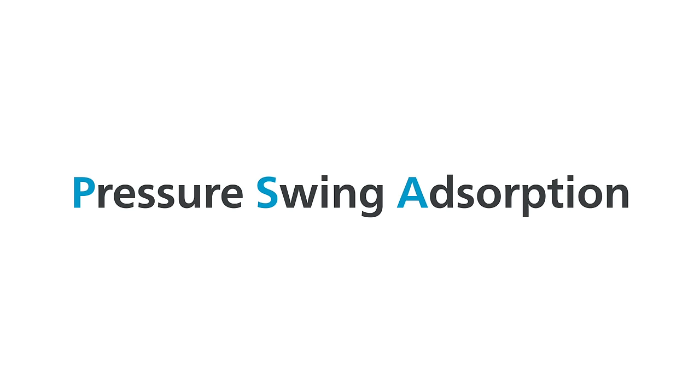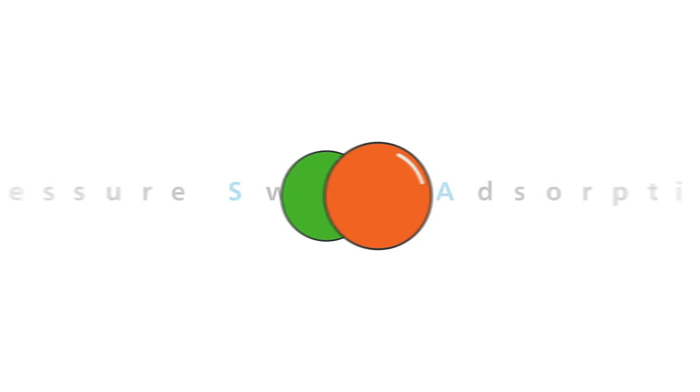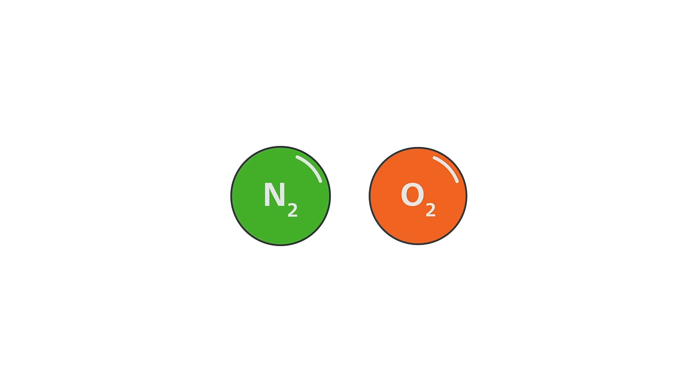What is PSA gas generation? PSA stands for pressure swing adsorption. It's a technology that can be used to generate nitrogen or oxygen for professional purposes.